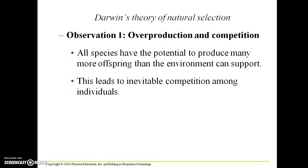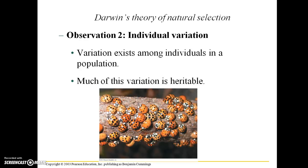Continuing with Darwin's theory of natural selection: one key observation is overproduction and competition. All species have the potential to produce many more offspring than the environment can support, leading to inevitable competition among individuals for resources such as food, shelter, and water. His second observation is that individuals vary — there is variation within a population where different individuals have slightly differing traits, and much of that variation is heritable. For example, here we have ladybird beetles that are all the same species but differ in color.